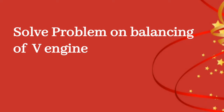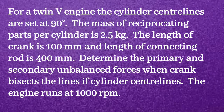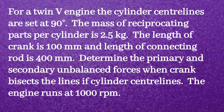Solve one problem on balancing of V engines. For a twin V engine, the cylinder center lines are set at 90 degrees. The mass of reciprocating parts per cylinder is 2.5 kg, length of crank is 100 mm, and length of connecting rod is 400 mm. Determine the primary and secondary unbalanced forces when the crank bisects the line of cylinder center lines. The engine runs at 1000 rpm.